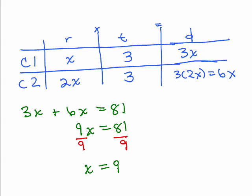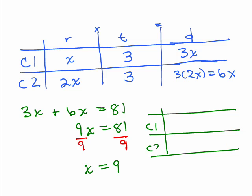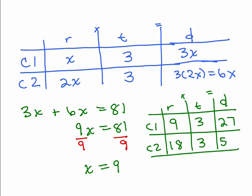All right, now what does x stand for? X stands for the rate of cyclist 1. So we're going to now actually fill in the real numbers into the chart of cyclist 1. There's a rate and a time and a distance. So we've got, for cyclist 1, we've got 9, so cyclist 2 at 2x would be 18. They each went 3 hours. So their distance, rate times time equals distance, is for the first - cyclist 1 would be 27, and cyclist 2 would be 54.